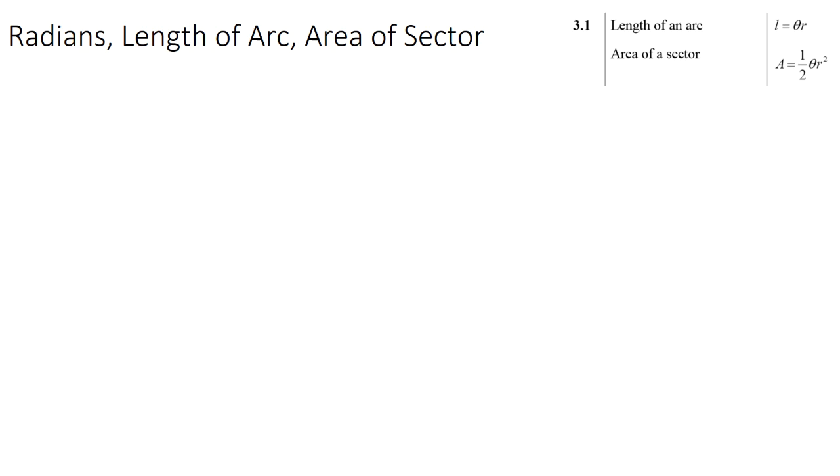In this video we are going to look at a key concept in IB maths exams which is radians, length of an arc, and area of a sector. You're probably familiar with a circle having 360 degrees. When we first learnt angles we learnt degrees, but there is another measurement of an angle which isn't degrees.